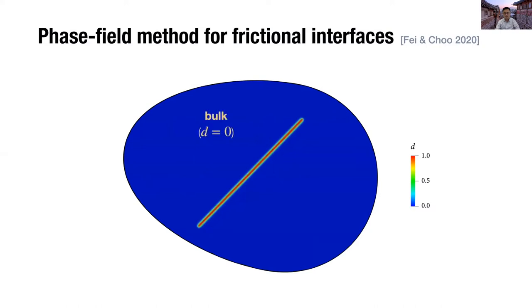We first identify that the phase field approximate domain has two regions. The first one is the bulk region, where the phase field variable is zero. And the other is the interface region, where the phase field variable is one.